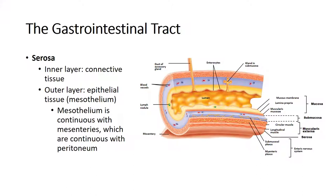The final outer connective tissue layer is the serosa. In some areas of the GI tract, this is continuous with the mesothelium — which becomes the peritoneum. The peritoneum is a single layer of cells with serous fluid being secreted to help lubricate the outer parts of these components. So the serosa, also called the mesothelium, is continuous with the peritoneum.